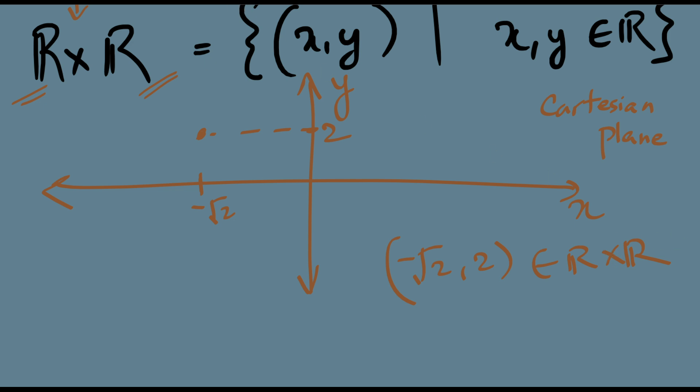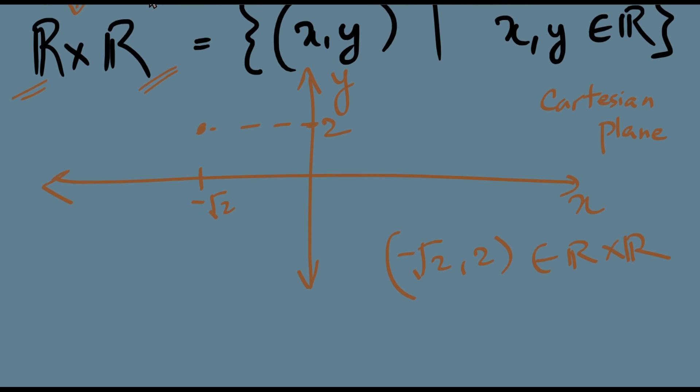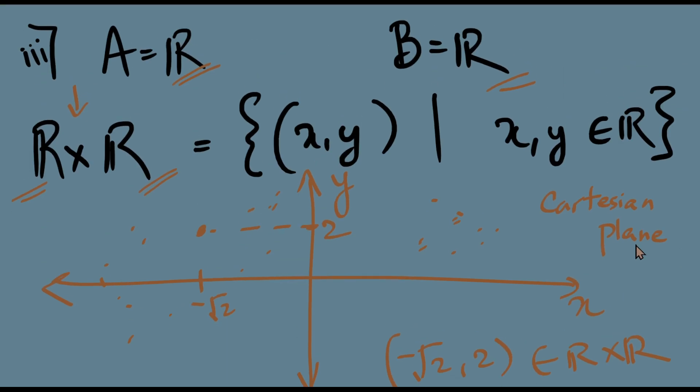Each and every point in this plane would represent some element of ℝ cross ℝ. Say this point is (-√2, 2). This (-√2, 2) would belong to ℝ cross ℝ because both are real numbers and they are ordered pairs. So every point in this coordinate plane would be an element in ℝ cross ℝ. So all this goes to say that the Cartesian products can be as arbitrary as you want. I hope this helps. Thank you.